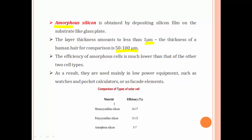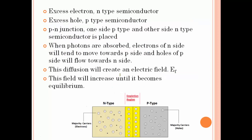Comparing the three types: monocrystalline silicon has an efficiency of around 14 to 17%, polycrystalline silicon is around 13 to 15%, and amorphous silicon is around 5 to 7%. Semiconductors with excess electrons are known as n-type, and those with excess holes are known as p-type. A p-n junction is formed when one side is p-type and the other is n-type.